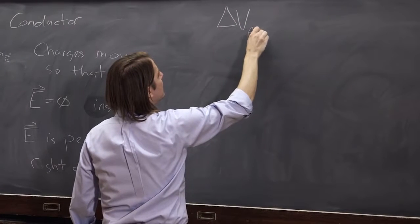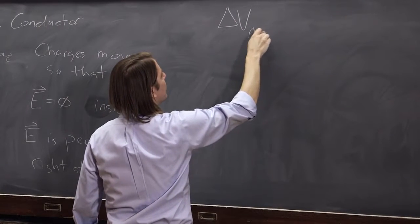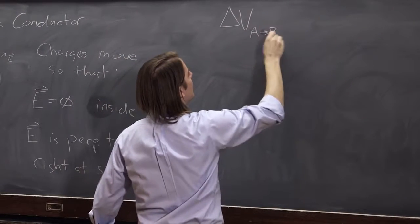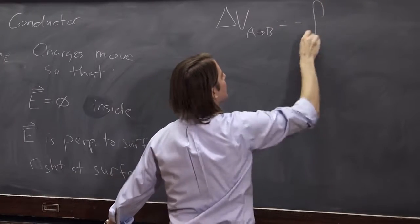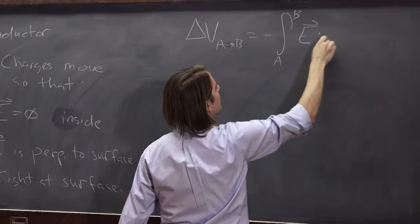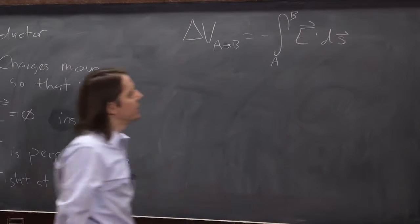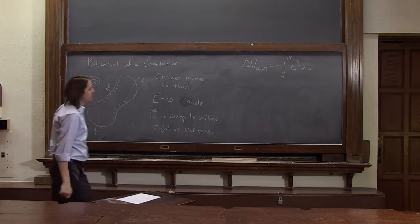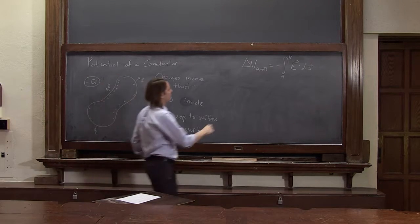Well, delta V from a to b is minus the integral from a to b of E dot ds. So let's see. What does that tell us? Well, if we go along the surface,